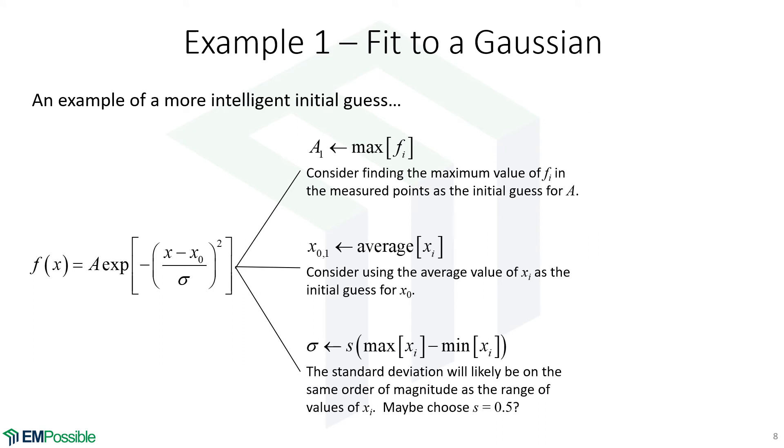The width. Maybe what you could do is look at the range of values that you're given for X and subtract the minimum from the maximum and maybe choose half of that or something like that. Pretty much no matter what you do, you're going to have a much better guess doing something like this than just choosing a random number.